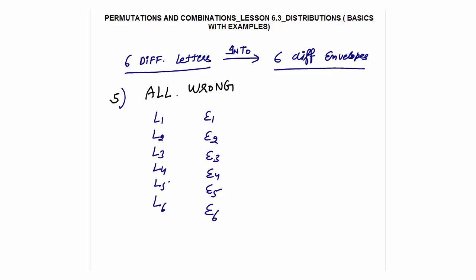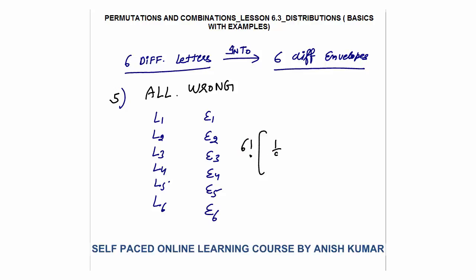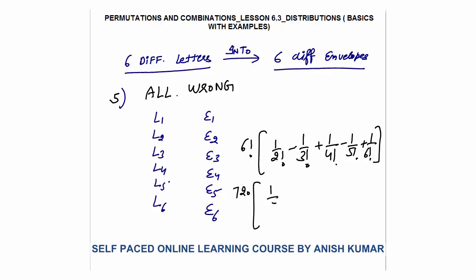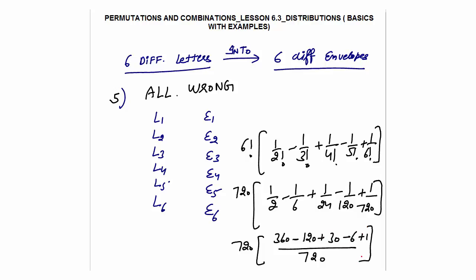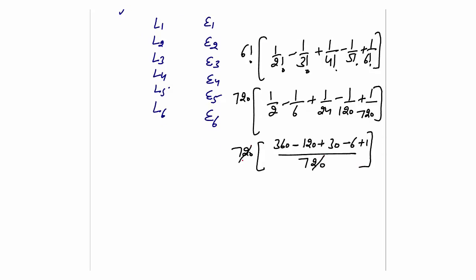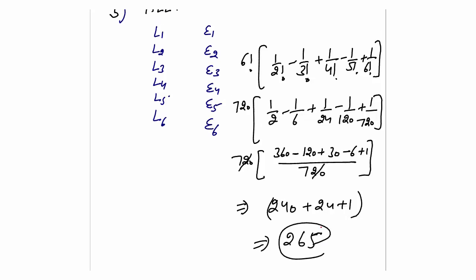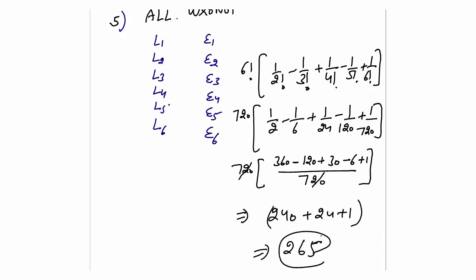For the 5th and last part: no letter goes to the wrong envelope — meaning all 6 go to the wrong envelope. Apply the formula: 6! × (1/2! − 1/3! + 1/4! − 1/5! + 1/6!). Since 6! = 720, taking LCM 720: this gives 720 × (360 − 120 + 30 − 6 + 1)/720 = 360 − 120 + 30 − 6 + 1 = 265 ways to post 6 different letters into 6 different envelopes such that no letter goes to the correct envelope.